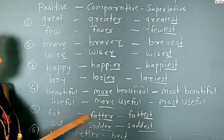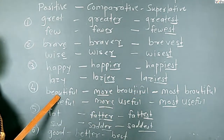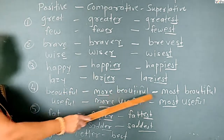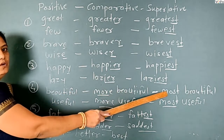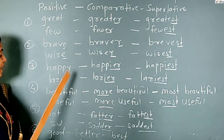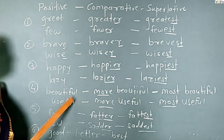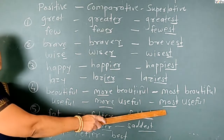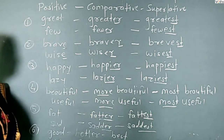For longer words, we use more and most. For example: more beautiful, most beautiful. More useful, most useful.